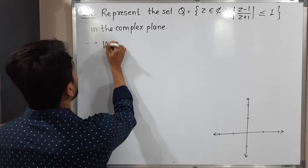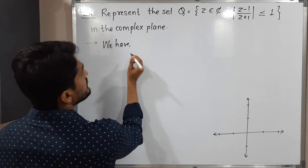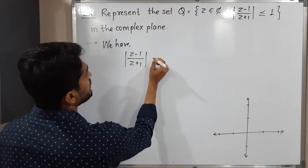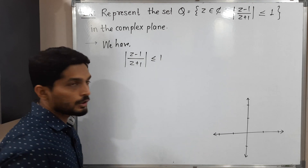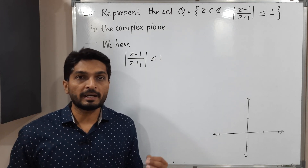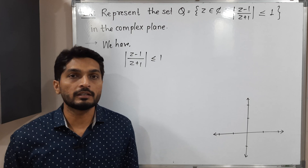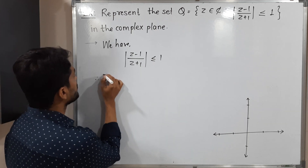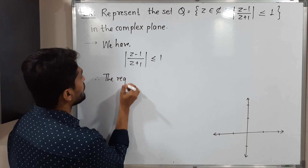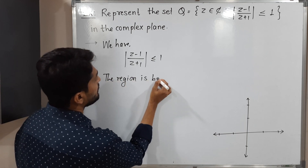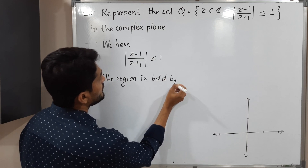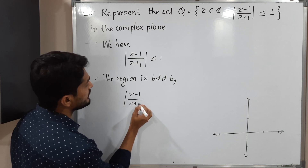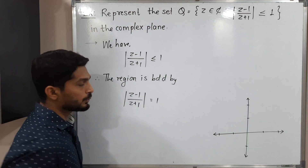The condition given to us is: mod (Z minus 1) upon (Z plus 1) less than or equal to 1. Generally, what we do is replace the inequality by equality so we can easily find a curve. So let us replace inequality by equality — the region is bounded by the curve obtained this way.